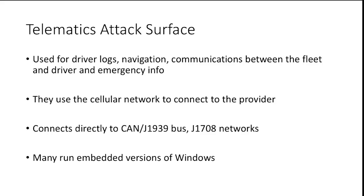Let's talk about the telematics attack surface. Most heavy trucks out on the road in a fleet have a dash-mounted touchscreen that controls driver logs, navigation, fleet communication — kind of like email — and in emergencies contacts the fleet. They use the cellular network to connect to the telematics provider. These devices connect directly to the CAN and J1939 bus, and also the legacy J1708. Many run embedded versions of Windows like Windows CE or XP Embedded — which is kind of scary. We've had some luck routing them by doing things like popping an SD card out of the back.